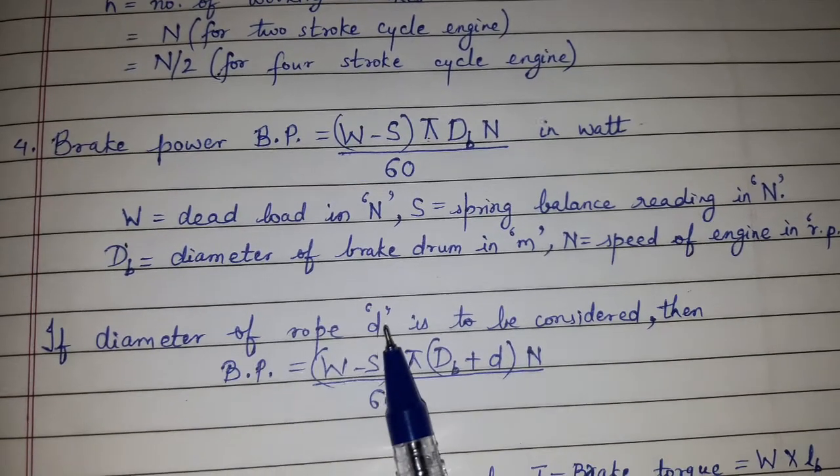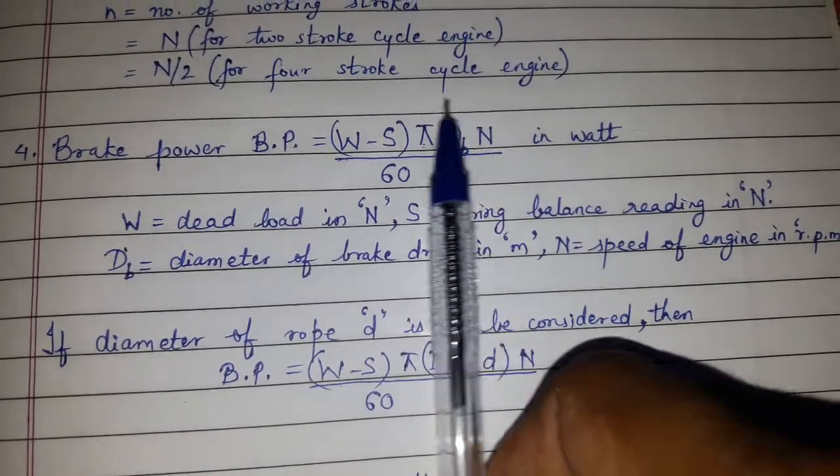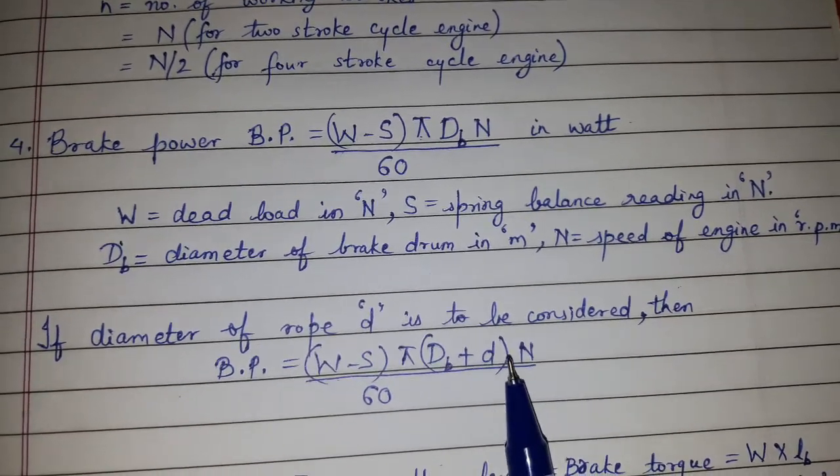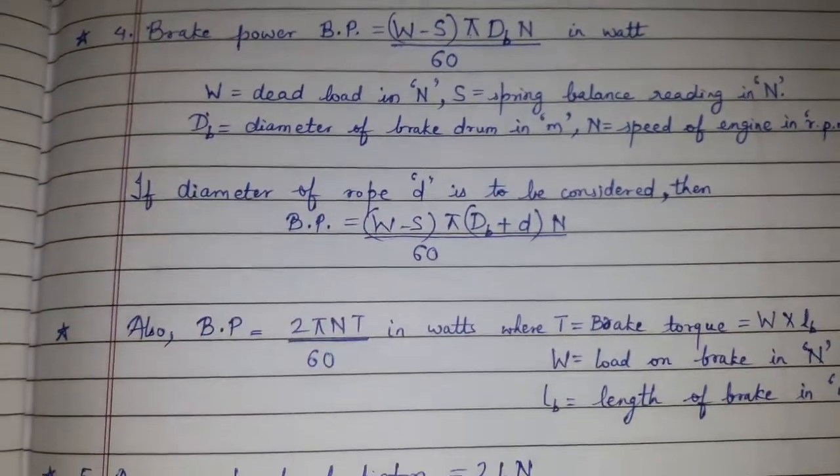If the diameter of the rope is given which is d, then this formula will be changed and here Db plus small d will come.